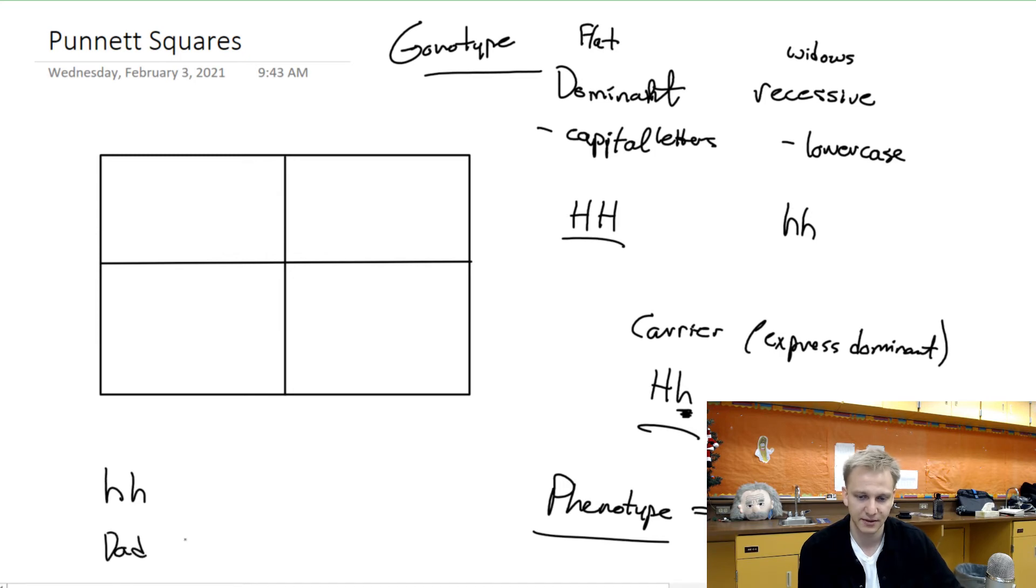And let's say that he crosses, or makes a baby, with my mother. This is how I was produced. And let's say that mom, let's make mom a carrier. So my mom has a flat hairline, but she also is carrying the gene, or carrying the potential of me having a widow's peak.